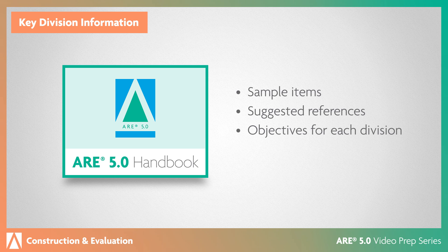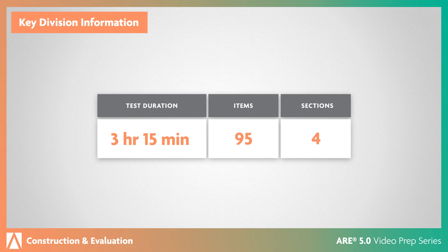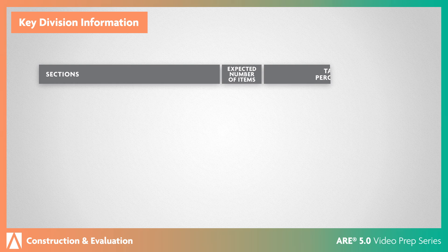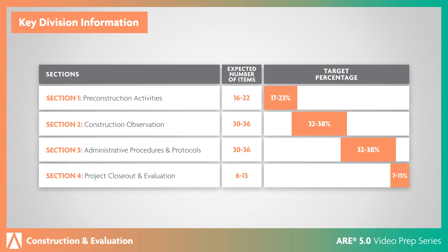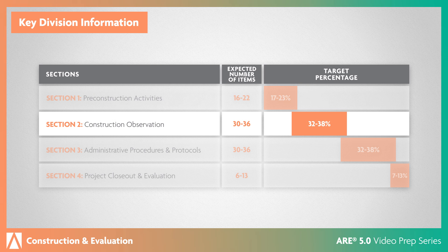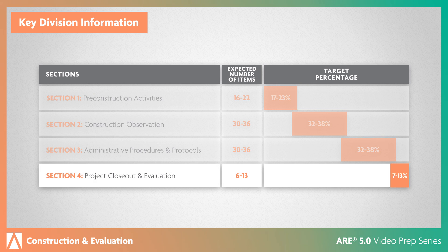The Handbook discusses the content of all six divisions and includes sample items and suggested references, as well as more information on the objectives for each division. You'll have three hours and 15 minutes to answer 95 items in this division, which includes sections on pre-construction activities, construction observation, administrative procedures and protocols, and project closeout and evaluation.